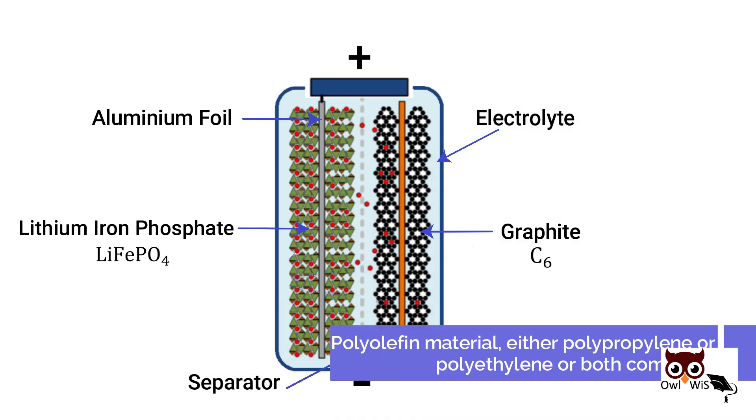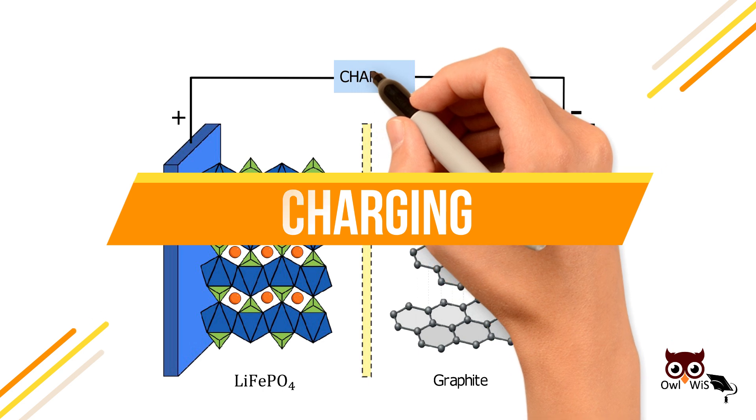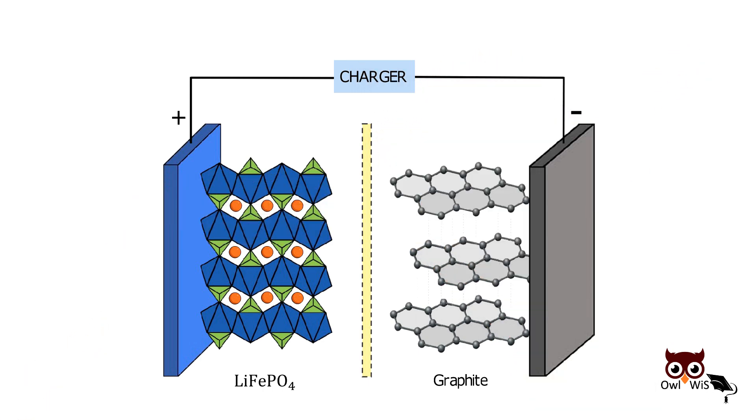When charging the LFP battery, the lithium ions get pulled from the surface of lithium iron phosphate crystal, enter the electrolyte, pass through the porous membrane separator, and reach the graphite electrode that can trap and hold this crossover lithium ions.